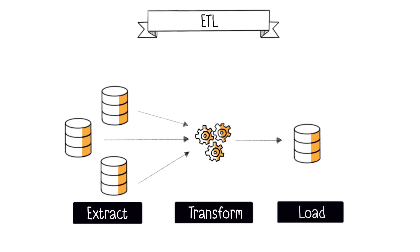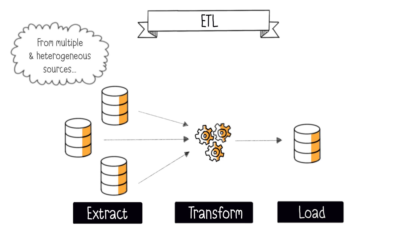The role of an ETL, for Extract, Transform, Load, is to consolidate data from the information system through three actions. These three actions are contained within its acronym. E for Extract: this step involves identifying and extracting data from multiple heterogeneous sources, including files, applications, or databases, for example.